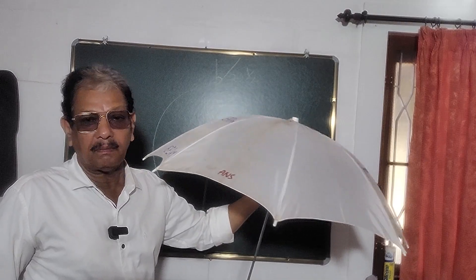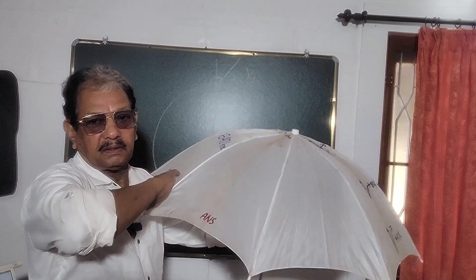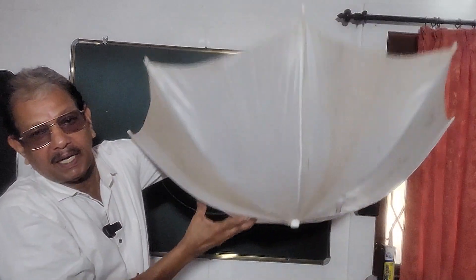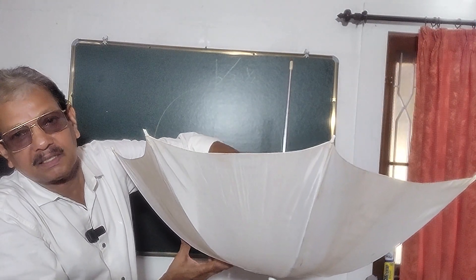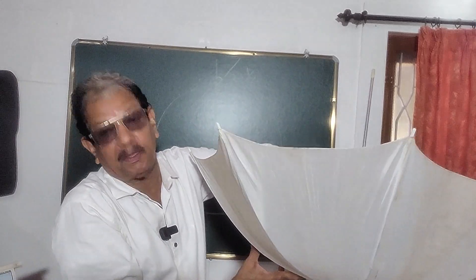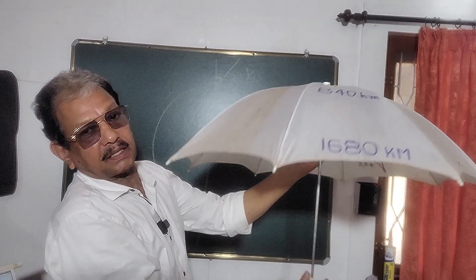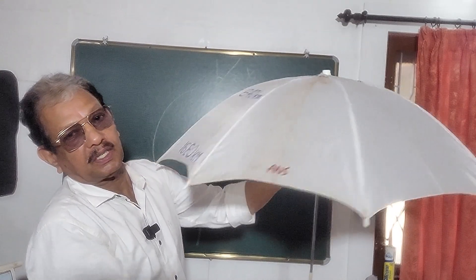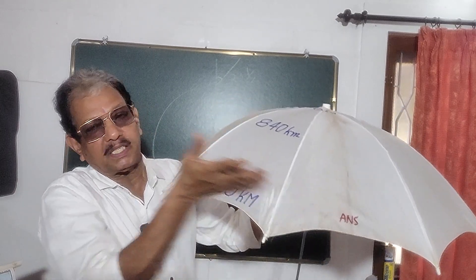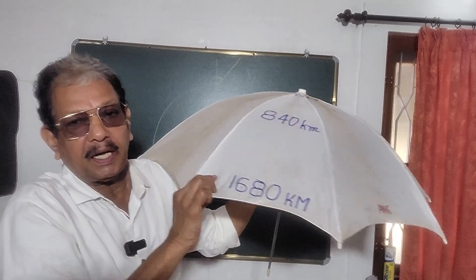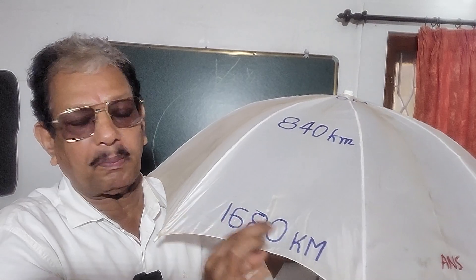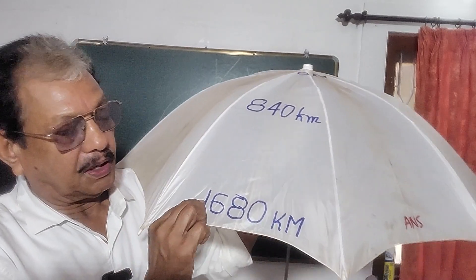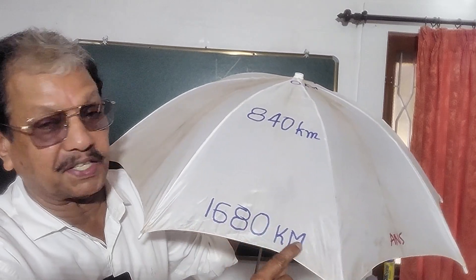We will explain this with the help of a teaching aid — we have an umbrella. This half circle can be considered as the northern hemisphere, and the other umbrella, the other side, can be considered as the southern hemisphere. The earth is rotating from west to east like this, so the places are moving from west to east. Suppose this is the equator — the speed of places moving eastward is 1,680 km per hour. Highest speed is on the equator.